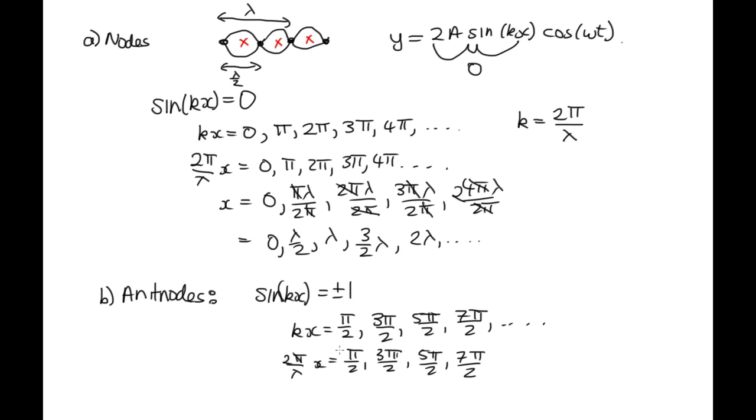OK, let's cancel the π's out now. And then we can rearrange this to get x. So x is equal to λ divided by 4 is what we get from this one. Here, we're dividing by λ over 2. So we end up with 3λ over 4. Here, we end up with 5λ over 4, 7λ over 4, et cetera.